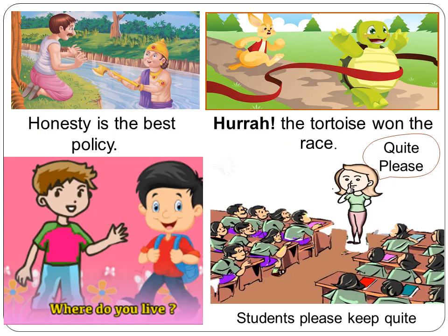Children, look at the picture. The first picture tells you about the woodcutter and the garden of the river — it gives you a moral: 'Honesty is the best policy.' The picture below that, the boy is asking the other boy, 'Where do you live?' In the third picture of the hare and the tortoise, the tortoise says, 'Hurrah, the tortoise won the race!' And in the fourth picture, the teacher tells the children, 'Keep quiet, please.'